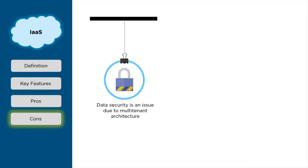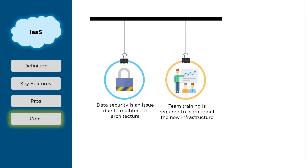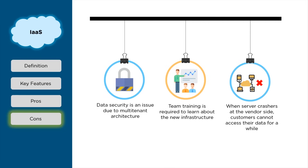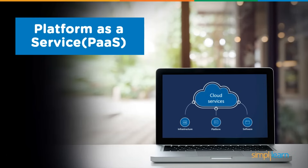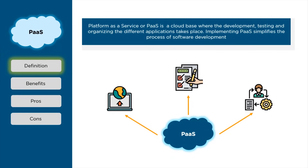The cons of IaaS: it is a multi-tenant architecture, which causes data security issues. When a new infrastructure is introduced, team training is required and it consumes a lot of time. If the server crashes on the vendor side, customers cannot access their data for a while and must wait until the vendor resolves the issue.